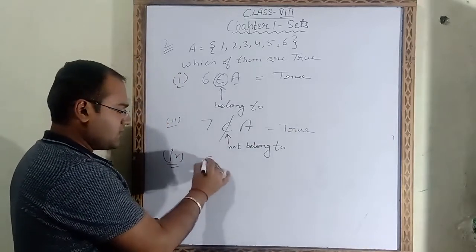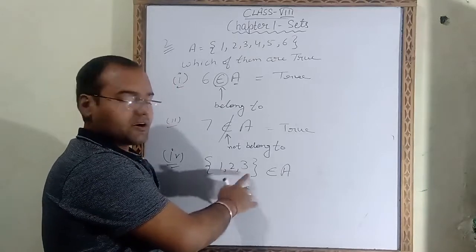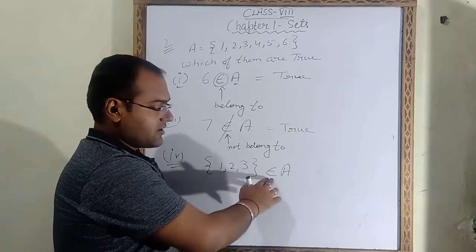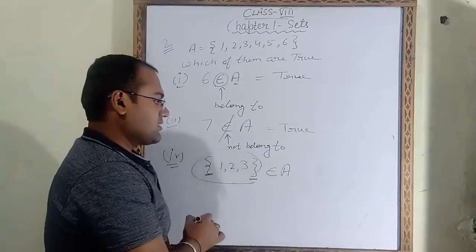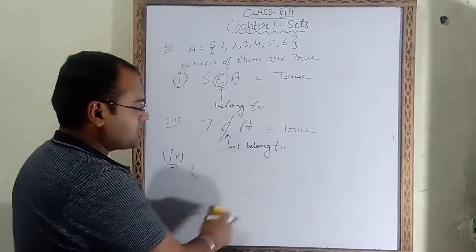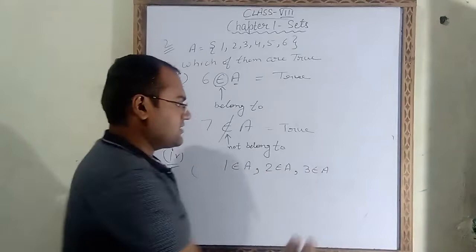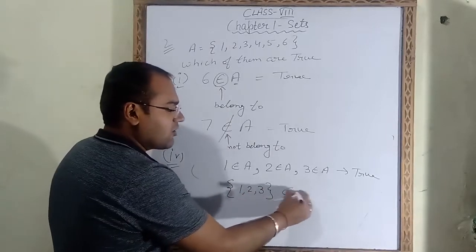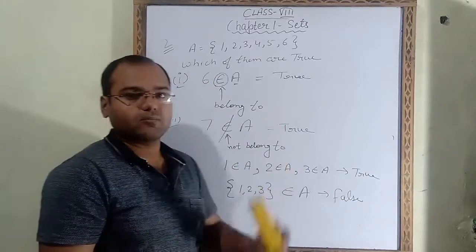Fourth part: {1, 2, 3} ∈ A. Elements 1, 2, and 3 are written inside curly brackets, meaning this is a set. A set does not belong to another set — only elements belong to A. If instead it were written 1 ∈ A, 2 ∈ A, or 3 ∈ A, then we would say the statement is true. But here the set {1,2,3} is given as belonging to A, so this statement is false.